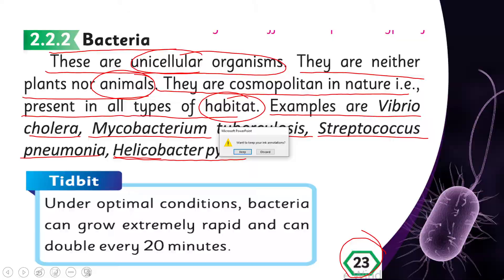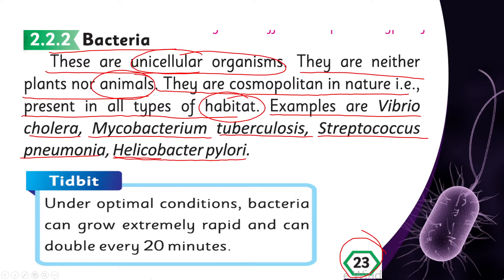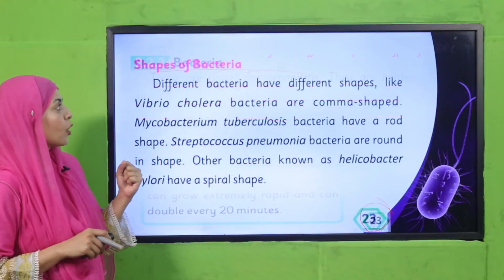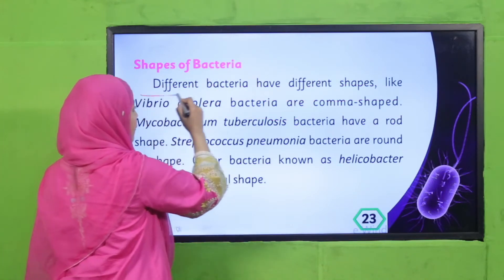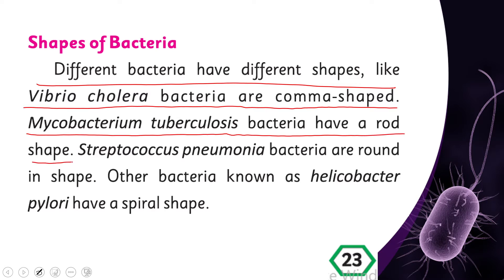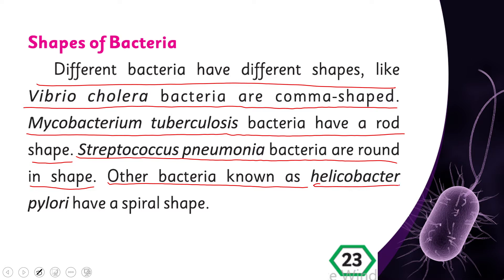There are different types of bacteria which have different shapes — some cause diseases and some are healthy. Vibrio cholerae bacteria are comma-shaped. Mycobacterium tuberculosis bacteria have a rod shape. Streptococcus pneumoniae bacteria are round in shape. Other bacteria, known as Helicobacter pylori, have a spiral shape.